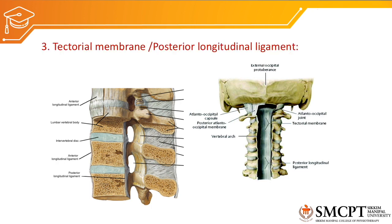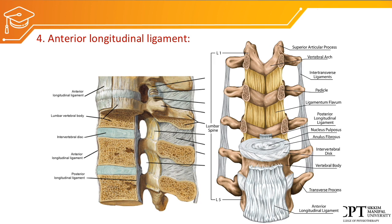The next ligament is the tectorial membrane, which is the other name for the posterior longitudinal ligament in the vertebral column. The tectorial membrane or posterior longitudinal ligament is situated just posterior to the body of the vertebra. It generates force which prevents excessive flexion of the vertebral spine. Next is the anterior longitudinal ligament, situated anterior to the vertebral spine, which generates force preventing excessive extension.